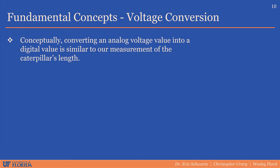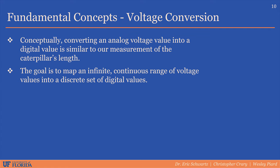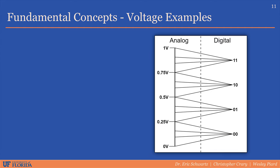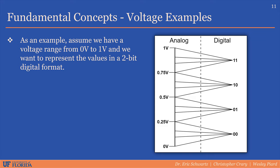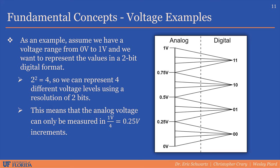Measuring the caterpillar's length shares concepts with analog-to-digital converters. In the case of the caterpillar, we had to choose a discrete length measurement to represent a continuous actual length. For ADCs, we have to map a continuous and infinite range of voltage values into a discrete set of digital values. For example, if we measure a signal between 0 and 1 volt, a 2-bit digital number can represent 4 different voltage values, making our smallest distinguishable voltage increment 0.25 volts — which is relatively large for this range.